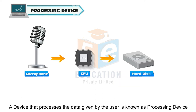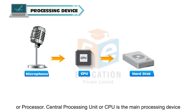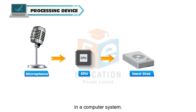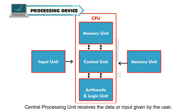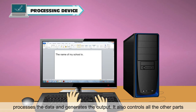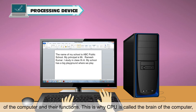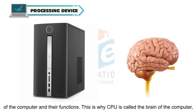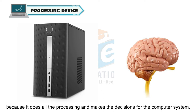A device that processes the data given by the user is known as a processing device or processor. Central processing unit or CPU is the main processing device in a computer system. It receives the data or input given by the user, processes the data and generates the output. It also controls all the other parts of the computer and their functions. This is why CPU is called the brain of the computer, because it does all the processing and makes the decisions for the computer system.